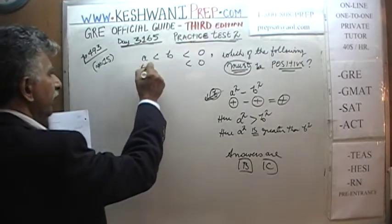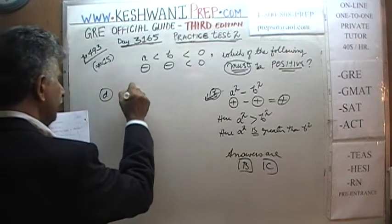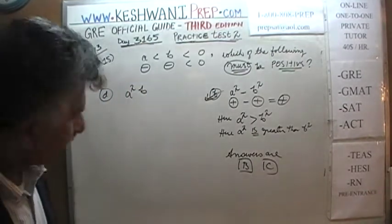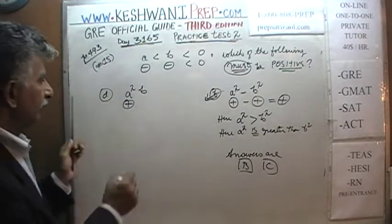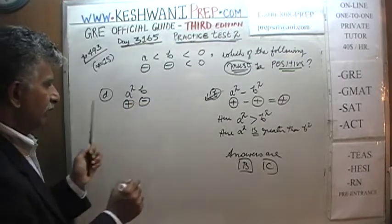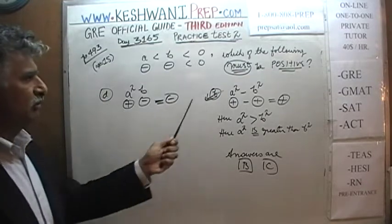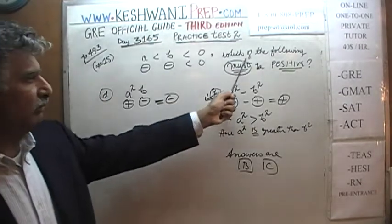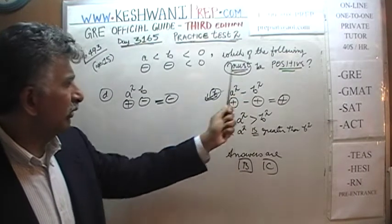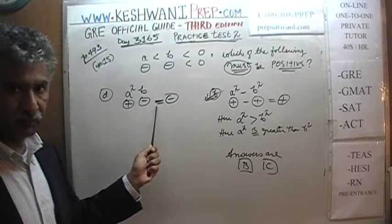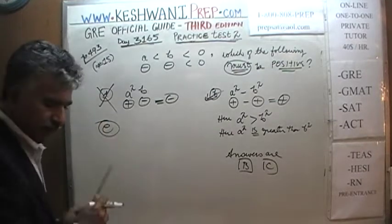So far we have two winners: B and C. Answer choice D says A squared times B. Since A is negative, A squared is positive. But B is negative. So we have positive times negative, which is always negative. The question asks which of the following must be positive, so D does not work — it will always be negative.